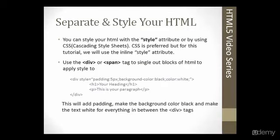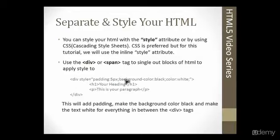The last thing we're going to talk about is separating and styling your HTML. You can style your elements with the style attribute, which is what we're going to do in this chapter. Next chapter we're going to introduce CSS, which is Cascading Style Sheets, where we would have an external file to do all the styling selectors. CSS is actually preferred, but for this tutorial, for simplicity, we're just going to use the inline style attribute. To separate certain blocks of HTML, we can use the div tag or the span tag.